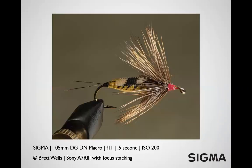This fly — about an inch long — is also a focus-stacked image. With hairs extending toward and away from the camera, there's no way to get all of that sharp in a single frame. You'd need f22 or f32 and then crop heavily, so focus stacking is the only practical solution for a subject like this.